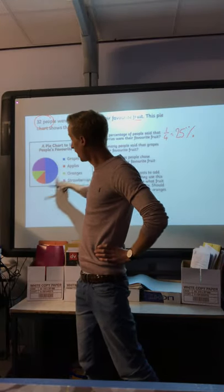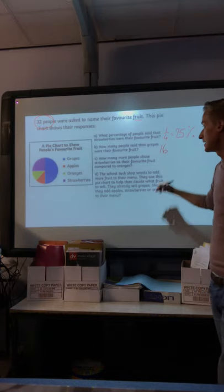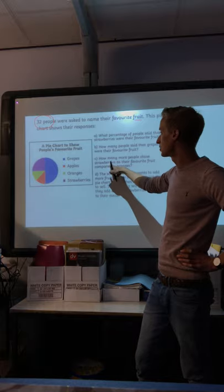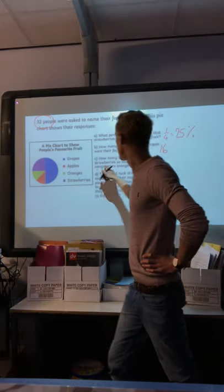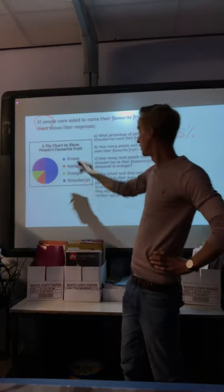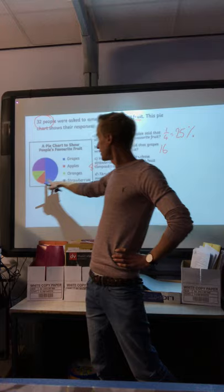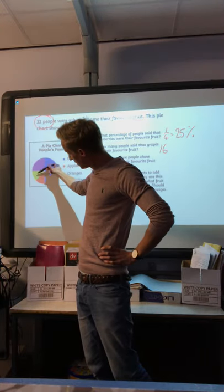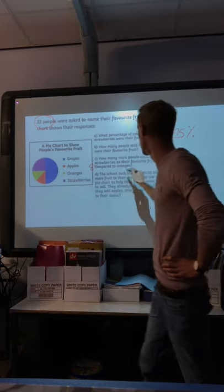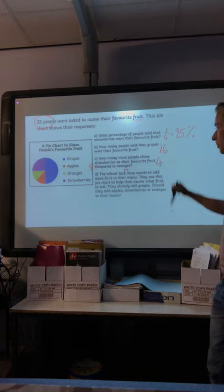How many people said grapes? Well, grapes is the blue. It's half the circle. So it's half the number of people. Half of 32 is 16. How many more people chose strawberries than oranges? Strawberries must be a quarter of the circle, or 25% of the circle. A quarter of 32 is 8. Compared to oranges, oranges is green. I'm going to take it to mean that these green and the red parts, oranges and apples, are equal. So an eighth of 32 is 4. So compared to those, how many more? Four people more.